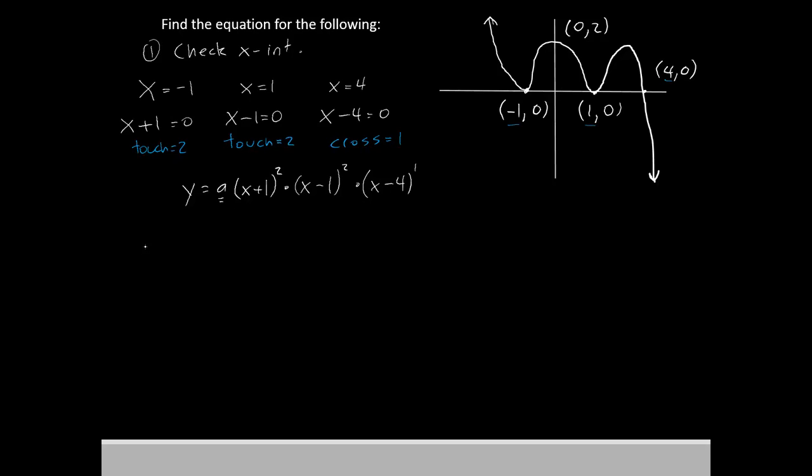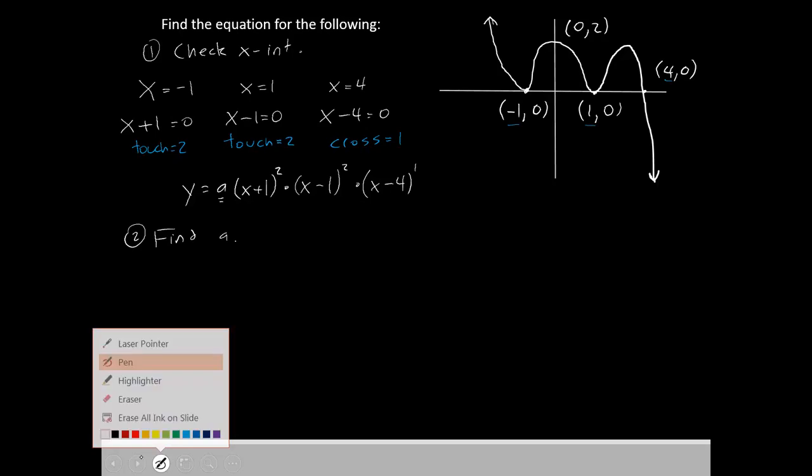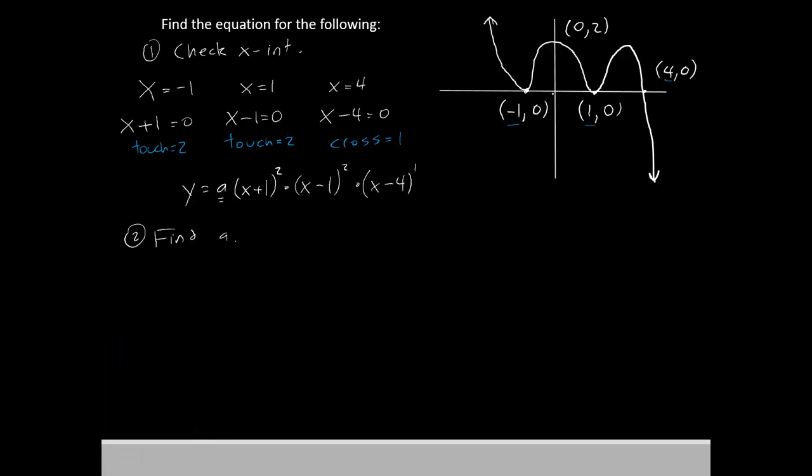All we have to do now is find a. Okay. That will be our second step. All right. So the only piece of information that we have not used yet is the y-intercept up here, where x is 0 and y is 2. So to find a, we're going to have to rewrite our equation, but we're going to let x equal 0 and y equal 2.